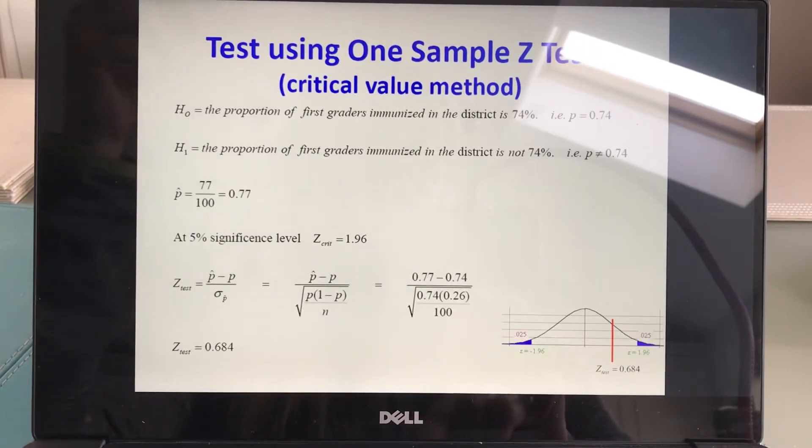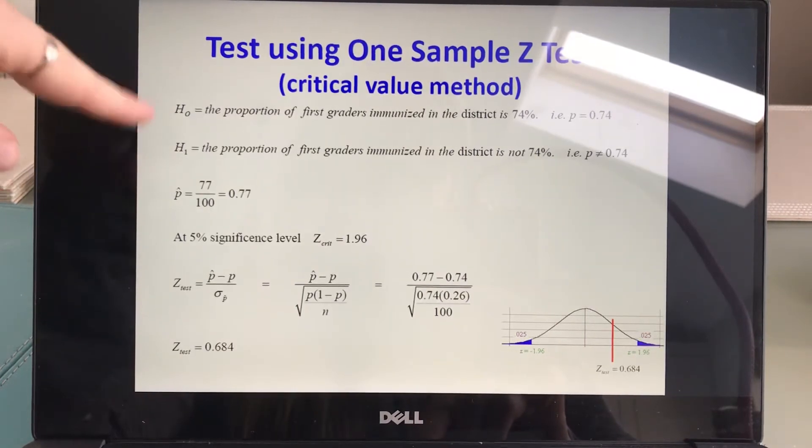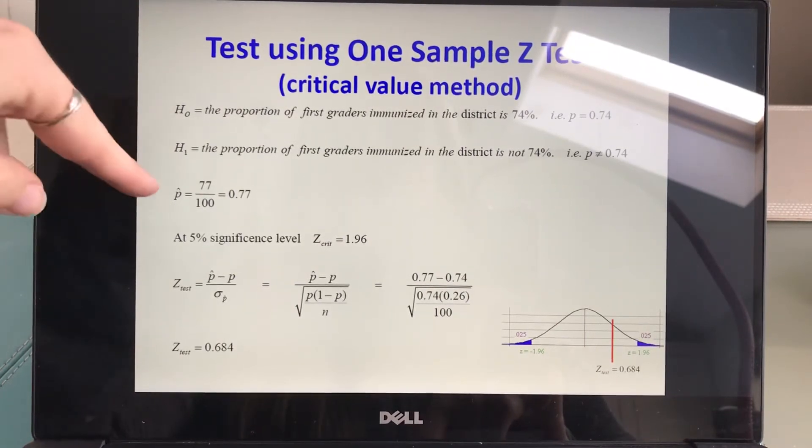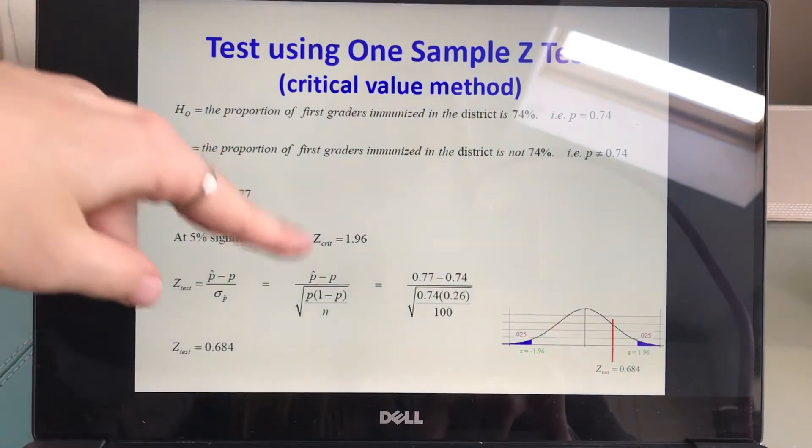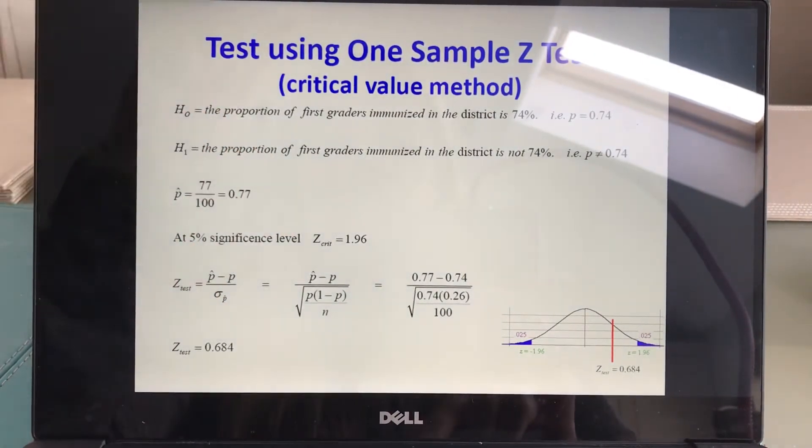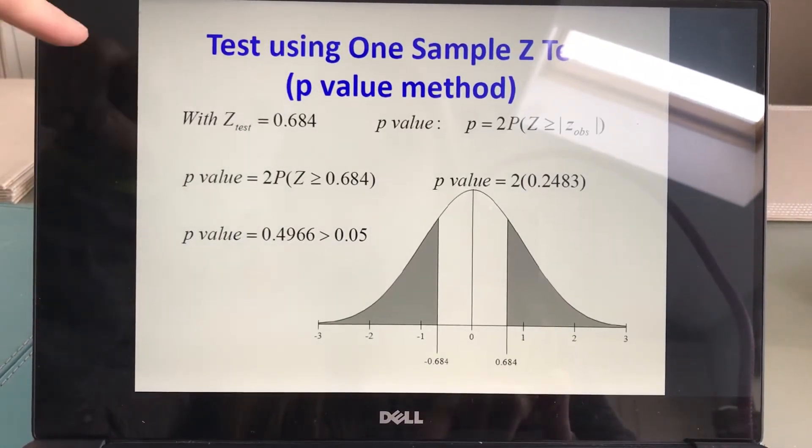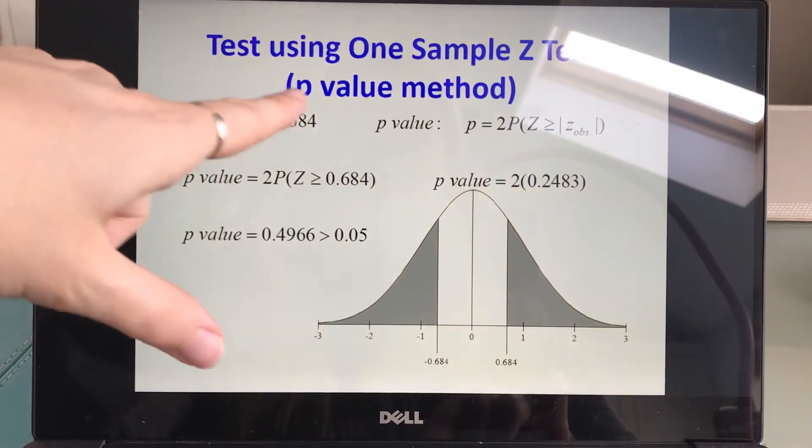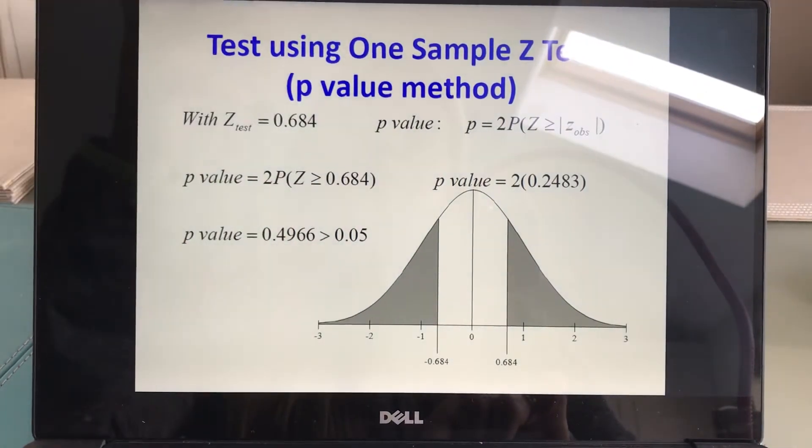Let's say you wanted to do it by a z-score. Here is your same beginning. This is if you want to do it by a z-score. And then this is the maths that you would use if you wanted to do a p-value.